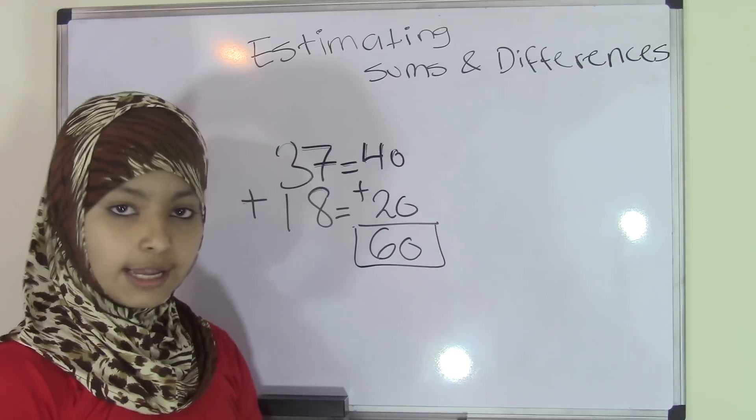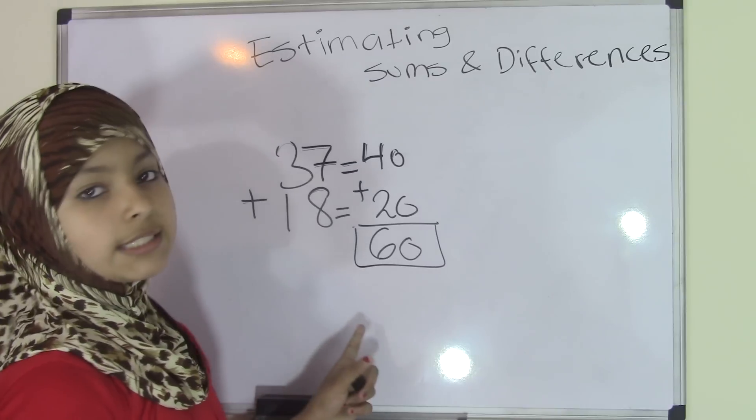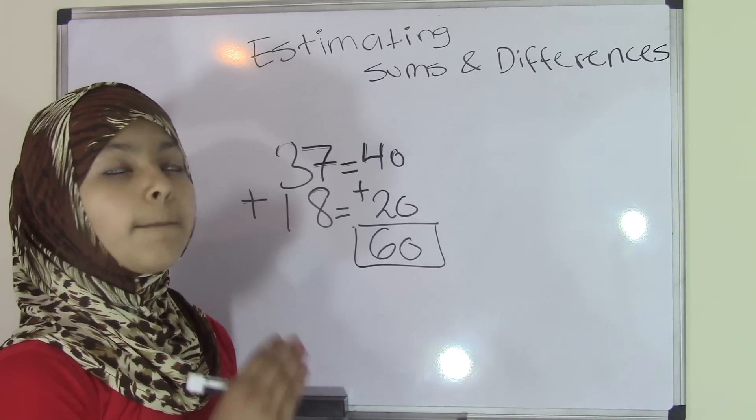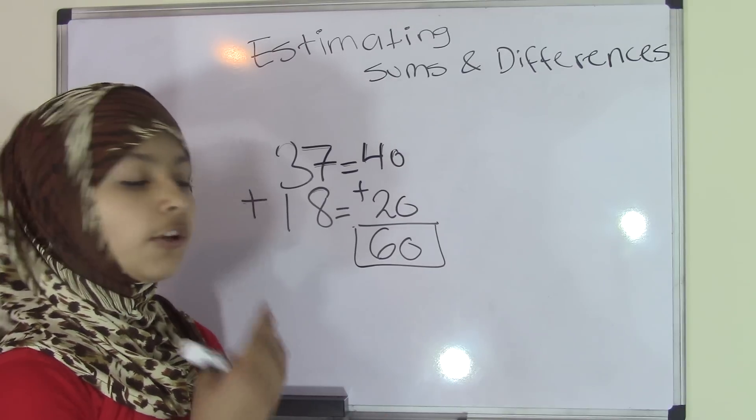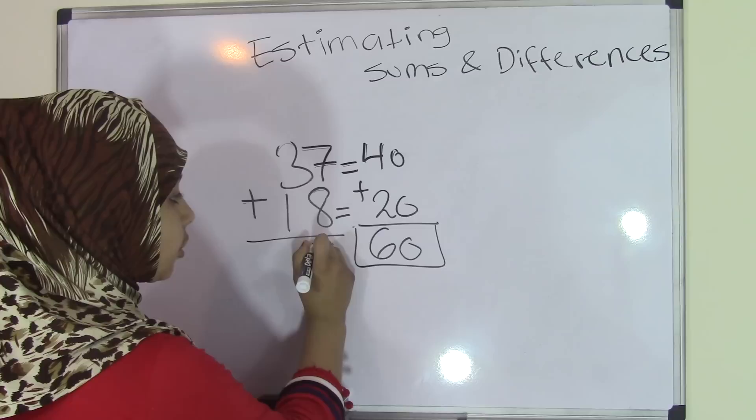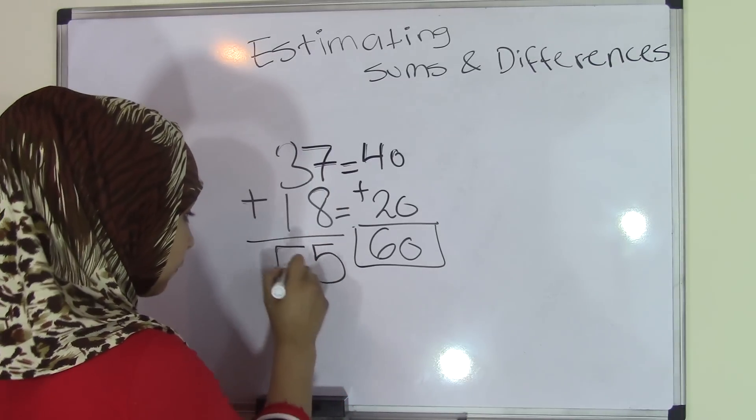To check your estimate, you can always go back to the original problem, 37 plus 18, and figure out the answer and then match them up to see whether your estimate is reasonable or not. So if we find the answer or the sum to the original problem, we will get 55.